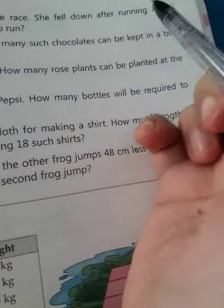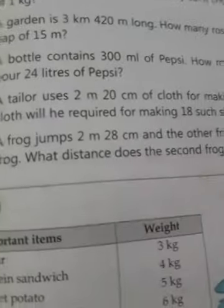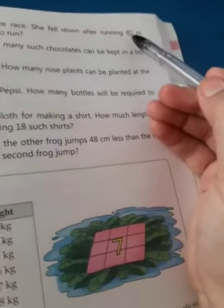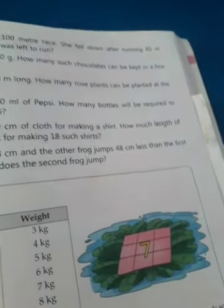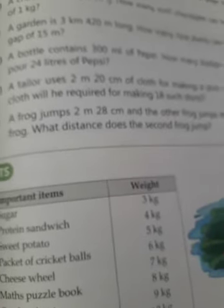Part d. Renu took part in hundred meter race. She fell down after running 85 meter 20 centimeter. What distance was left to run? Renu participated in a race, a hundred meter race. She fell down after running 85 meter 20 centimeter. After running this much she fell. What distance was left to run? How much remained to complete the race? We need to find that distance. See, total she had to run 100 meters. How much did she do before falling? 85 meter 20 centimeter she had run, then she fell.